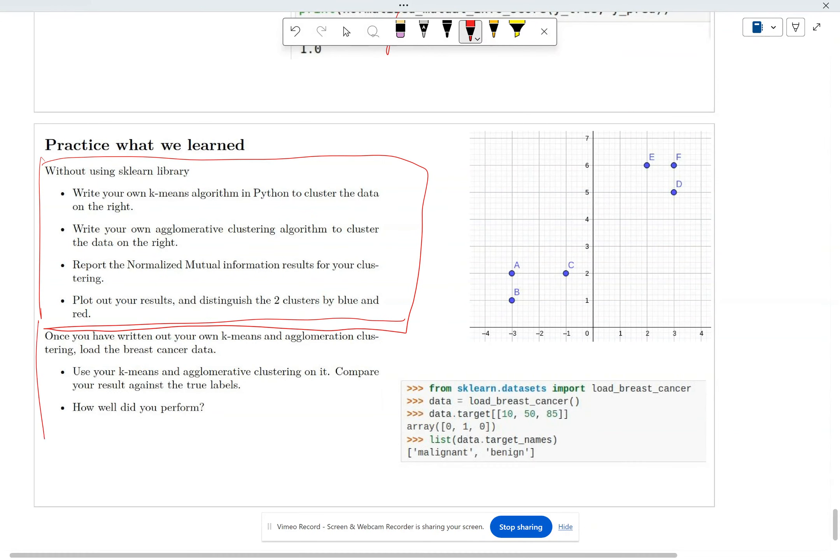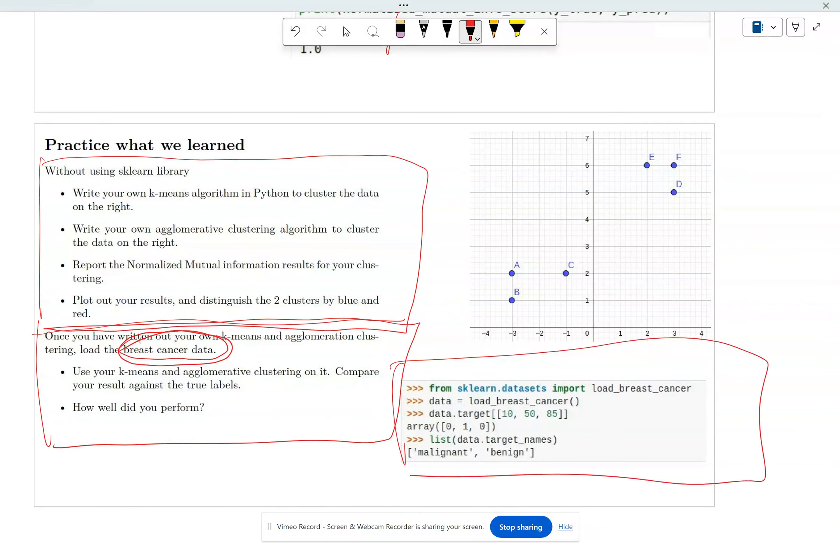If you are able to write this code here, then the next thing you want to try is to use the same code, but instead of on this simple data, you want to run it on the breast cancer data. So the breast cancer data, you can download it this way. Once you download it, try to run clustering. So it's binary, so it's 1 or 0. So you can run your own and see, essentially, whether you got the same results. So that's it for today. I'll see you next class.